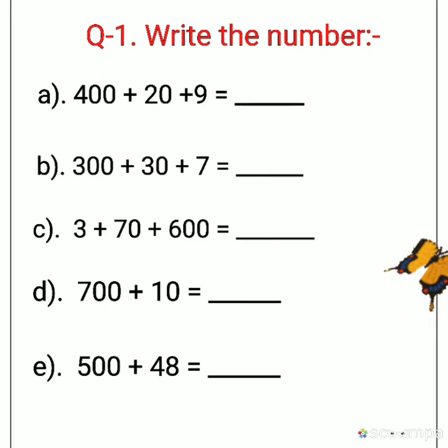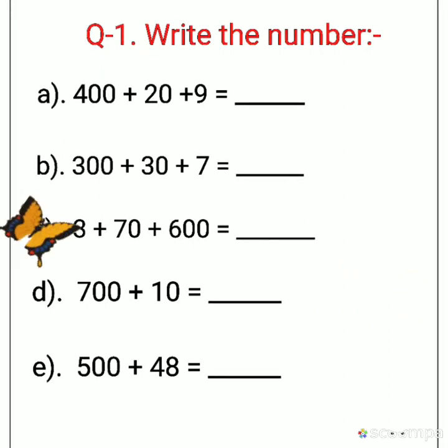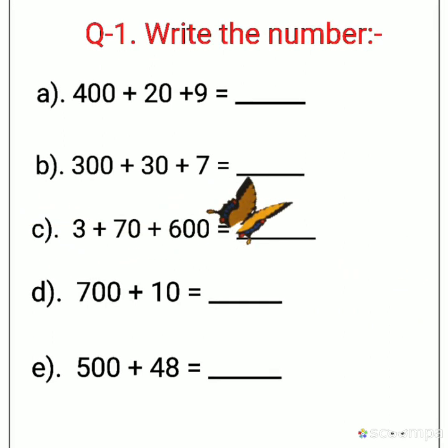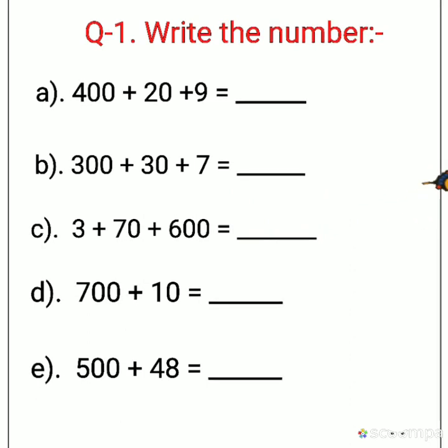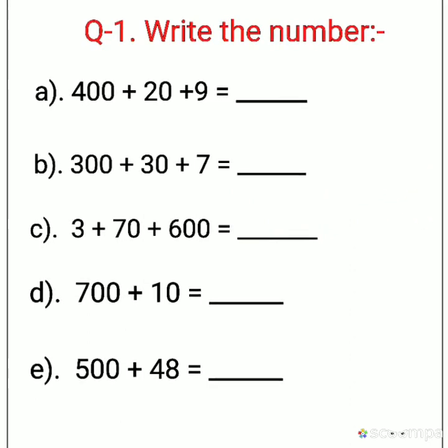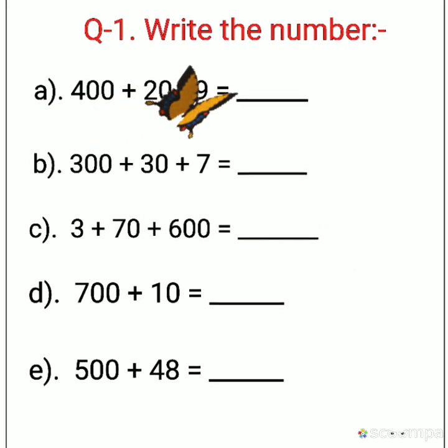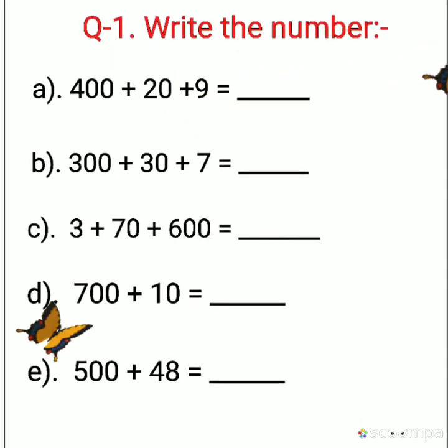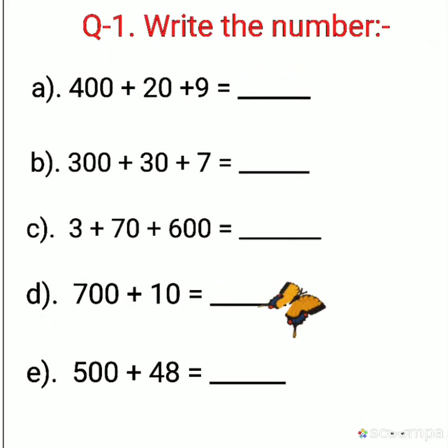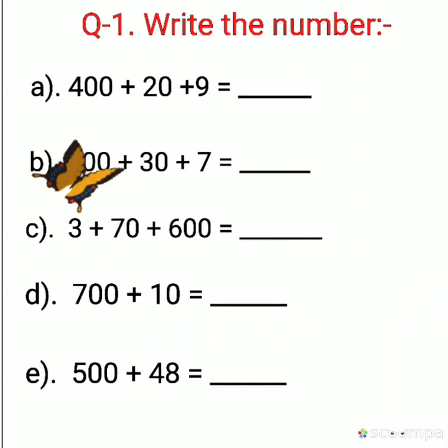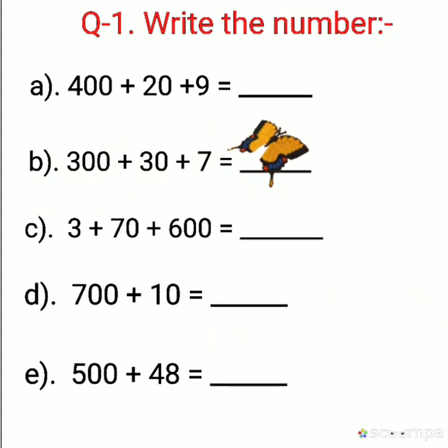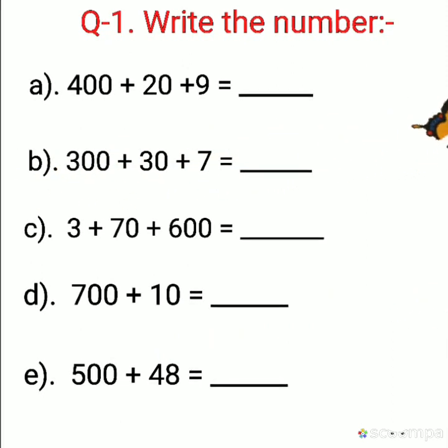So here is your worksheet. Write the number. For example, I will tell you A1. 400 plus 20 plus 9. When you will add all these numbers, which number will it make? 429. How will you write that? 429. Understood?